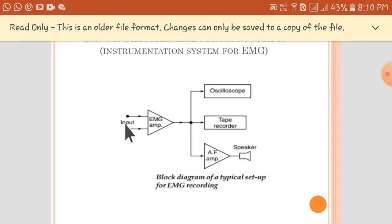These electrodes will pick up the signals and these signals are first applied to an EMG amplifier which will be a pre-amplifier. And these amplified signals can be recorded or displayed by using an oscilloscope.